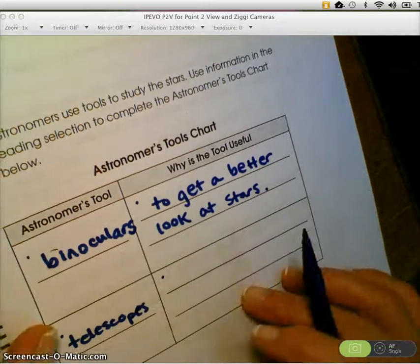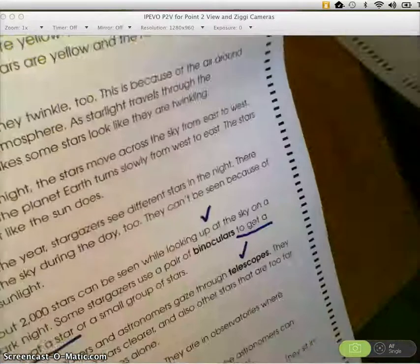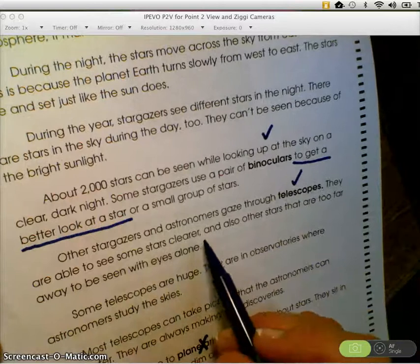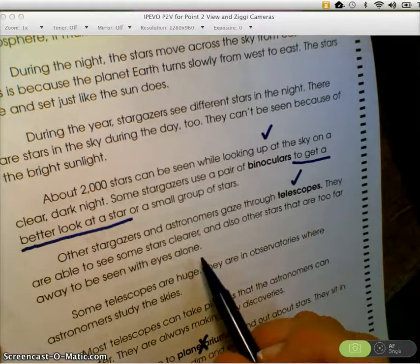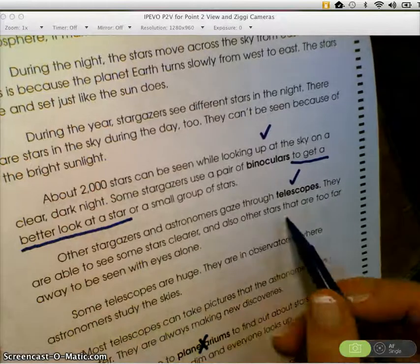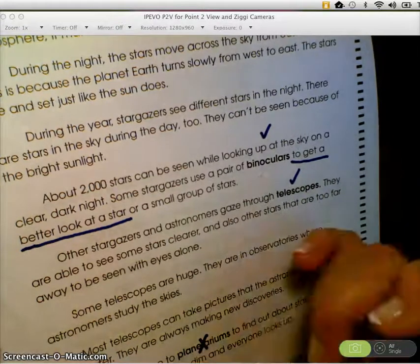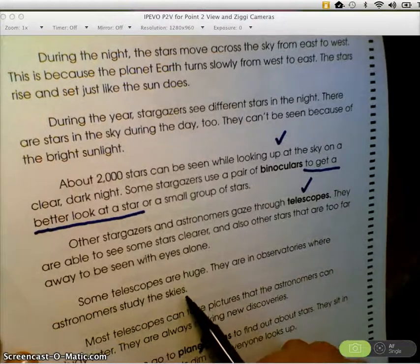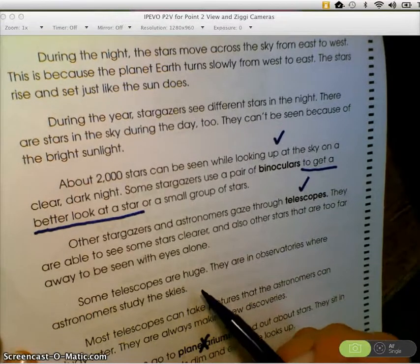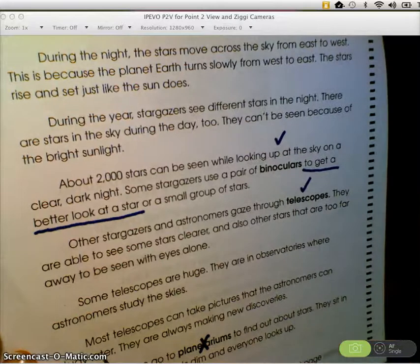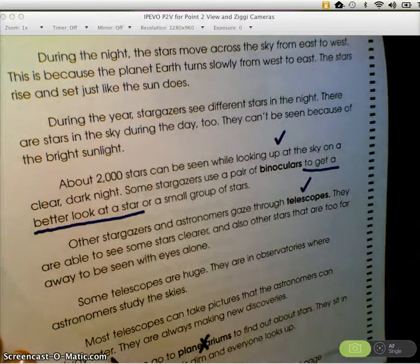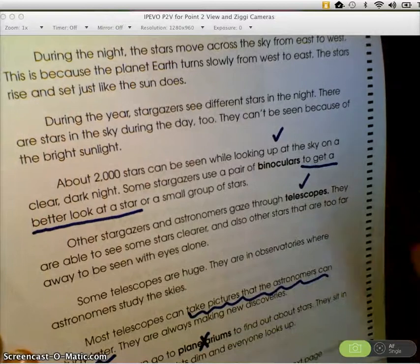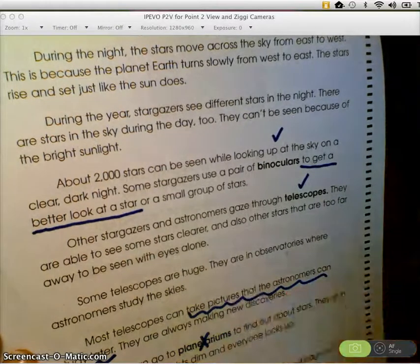Okay. Why are telescopes useful? Go back. Hmm. Other stargazers and astronomers gaze through telescopes. They are able to see some stars clearer and also other stars that are too far away to be seen with eyes alone. I could use that. See some stars clearer and other stars that are too far away. That's a lot though and it's not very clear. I'm going to keep reading to see if there's something better. Some telescopes are huge. They are in observatories where astronomers study the skies. That doesn't really answer how are they used or why are they used or why are they useful. Let's see this. Most telescopes can take pictures that the astronomers can study later. I like that one the best. They take pictures that astronomers can study later. I'm going to use that one. Could you have used one of these? See stars clearer? Sure. But this one works best for me.